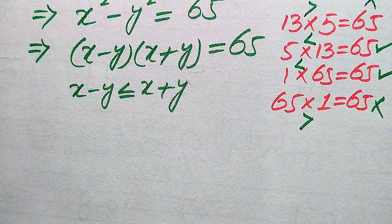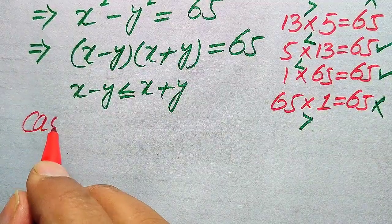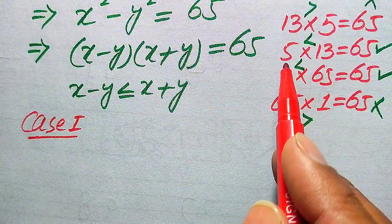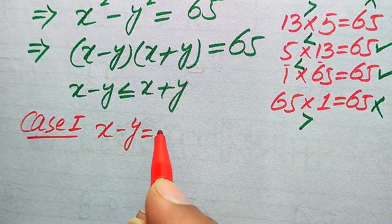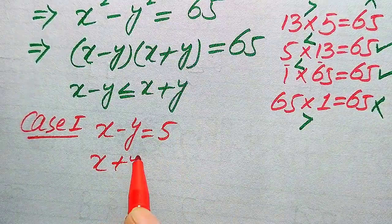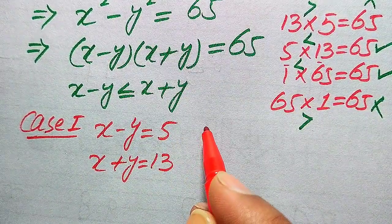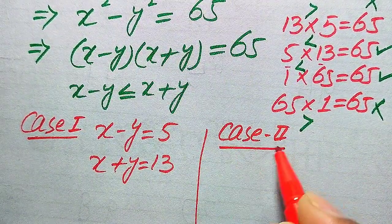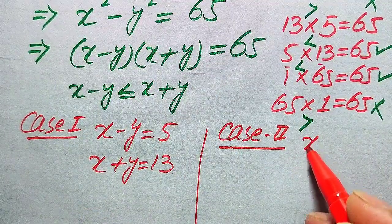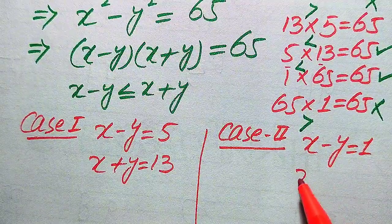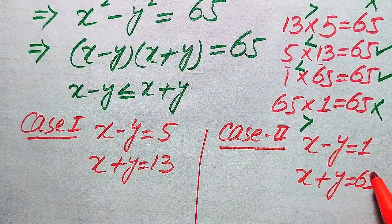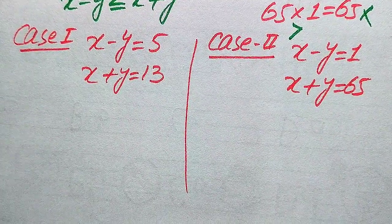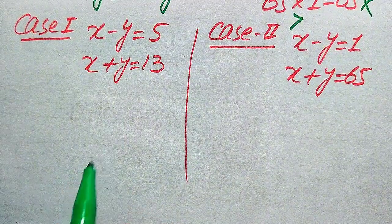We convert our problem into two cases. Case 1: comparing the factors with 5 and 13, we get x minus y equals 5 and x plus y equals 13. Case 2: comparing with 1 and 65, we get x minus y equals 1 and x plus y equals 65. Solving these cases gives the values of x and y, and then m.